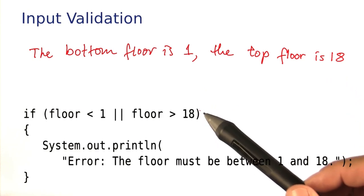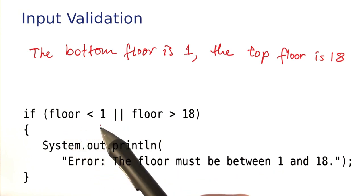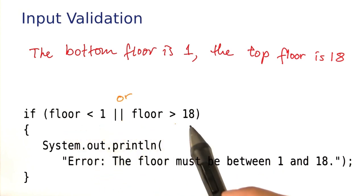Here is the Java code. Note the use of the or operator here. If the floor is less than 1 or greater than 18, then we print this error message.